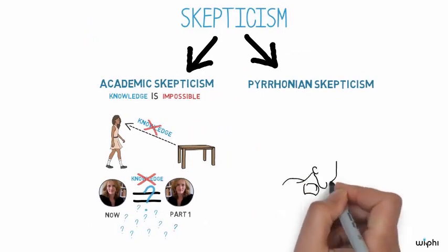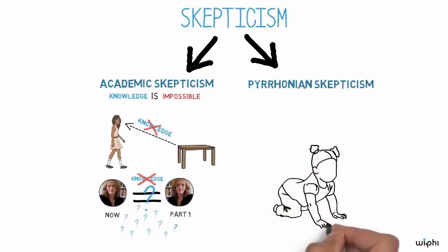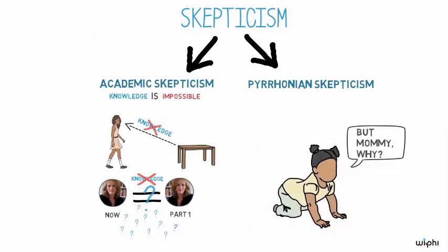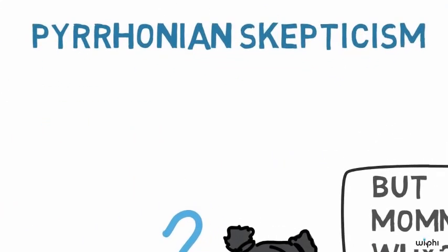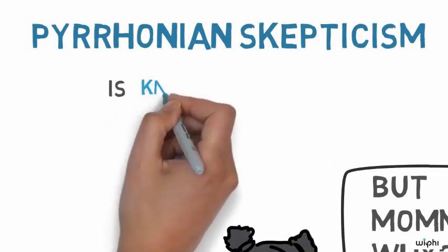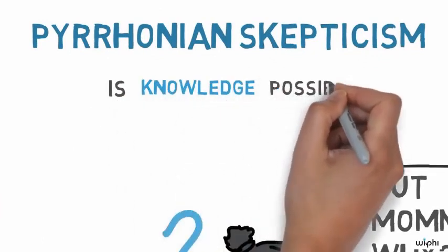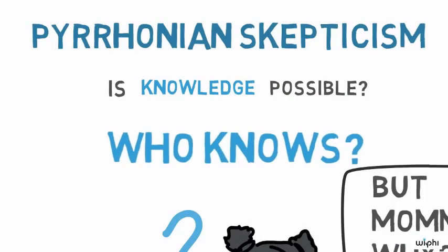Pyrrhonian skeptics went one step further. Their mission was just to keep on inquiring and doubting everything without reaching any conclusions at all. Where the academic skeptics argued that knowledge was impossible, the Pyrrhonian skeptics worked to suspend judgment even on that point, keeping all questions open.